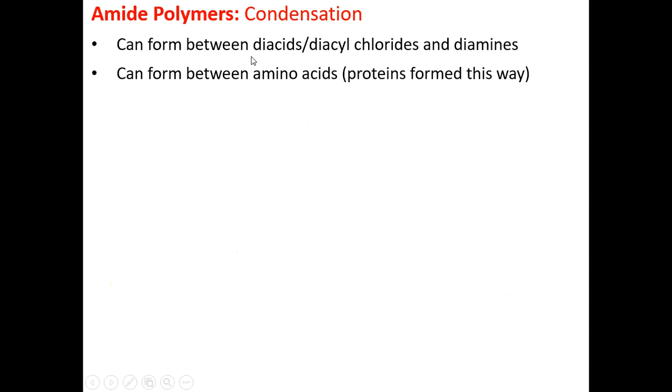Now we can have, depending on our monomers, two different ways of forming a polyamide. By using a diamine with a diacid or diacyl chloride, or by using an amino acid, a molecule that has an amine group as well as a carboxylic acid.